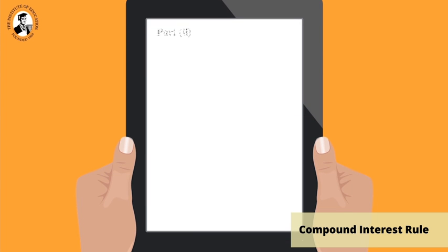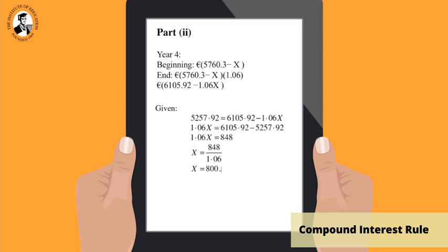Now we do part two. Year 4. The principal at the beginning of year 4 is 5,760.3 minus X euro. The amount at the end of year 4 can now be found by multiplying the principal by 1.06. When this is multiplied out, this comes to 6,105.92 minus 1.06X euro. Now, from the information given in the question,